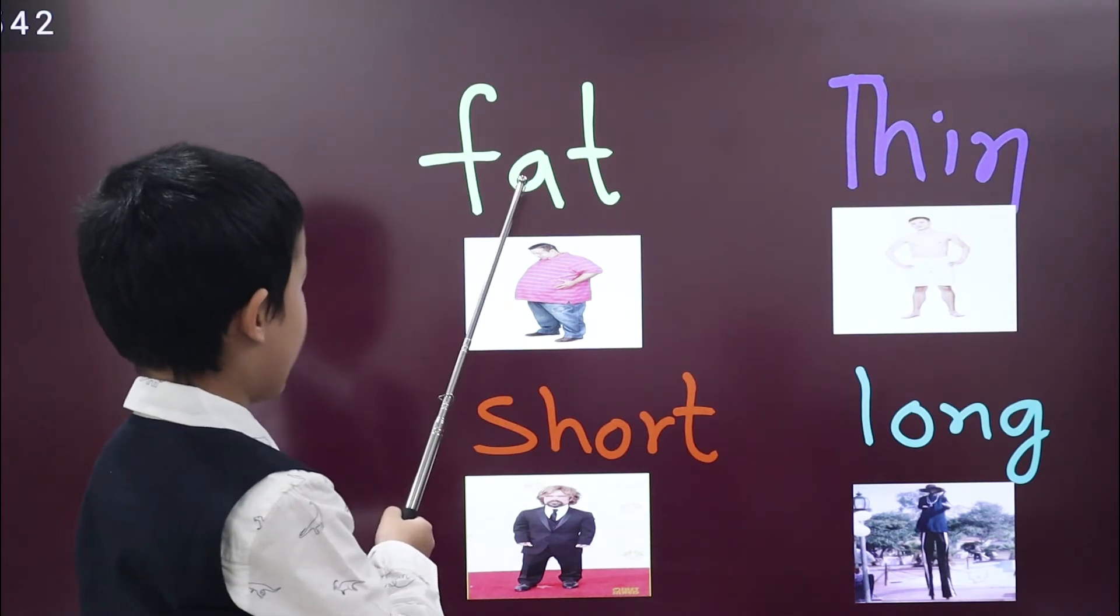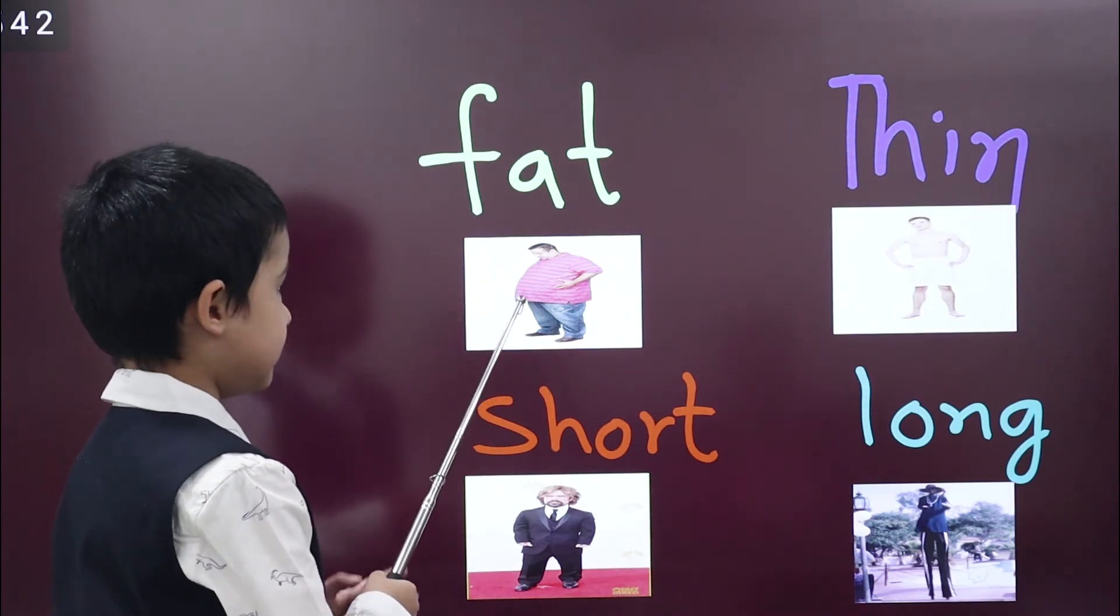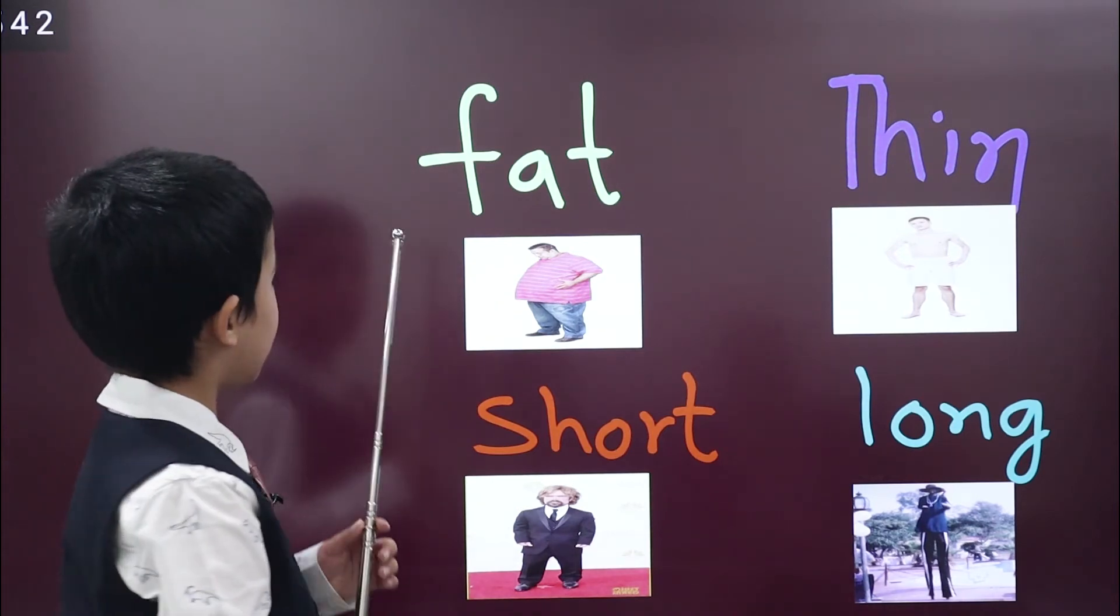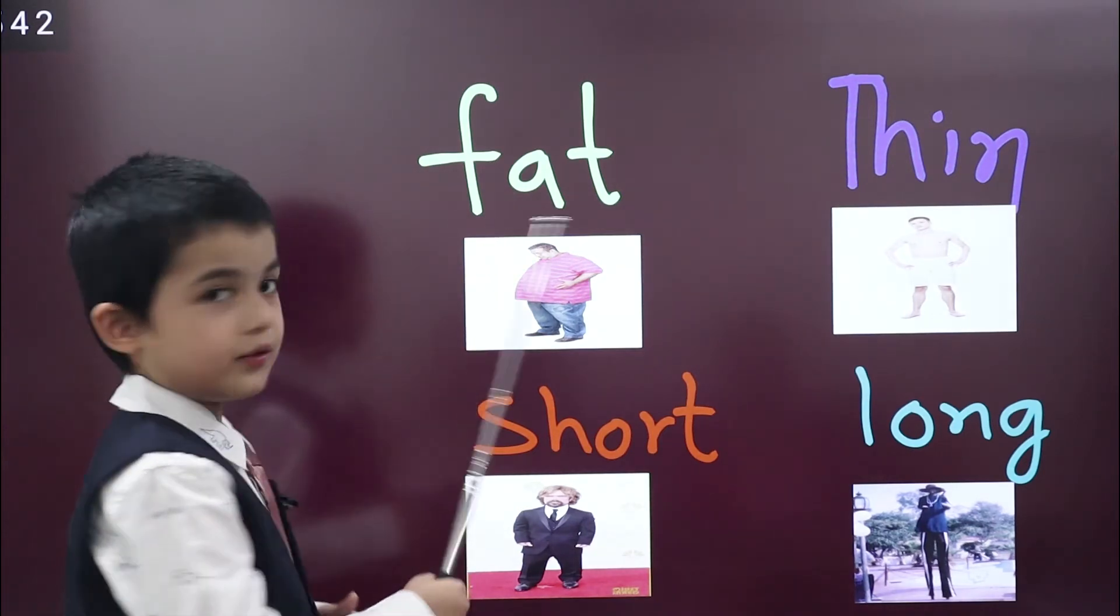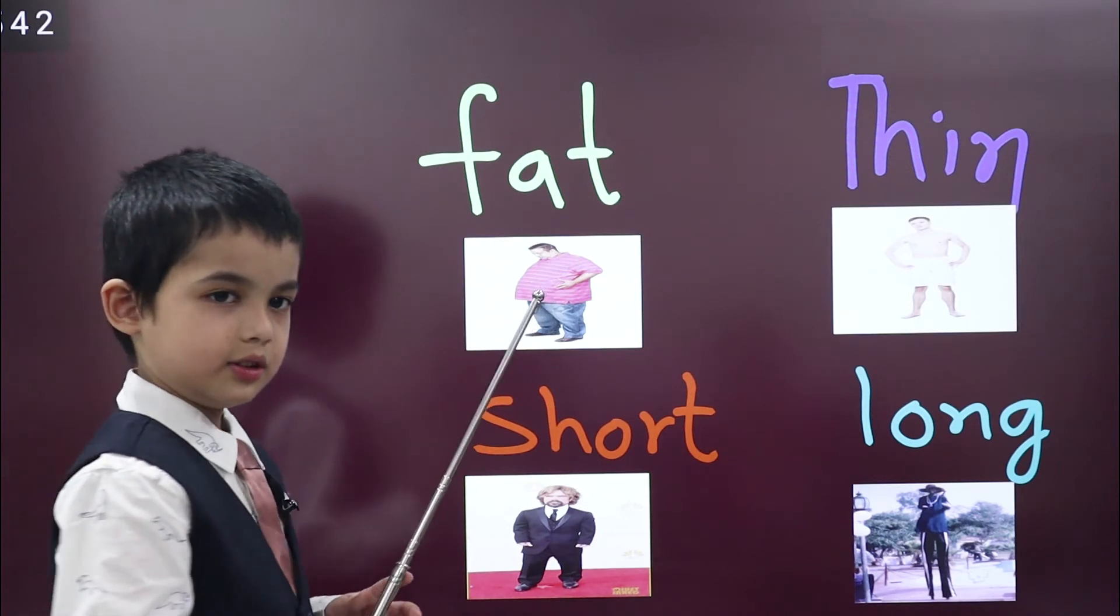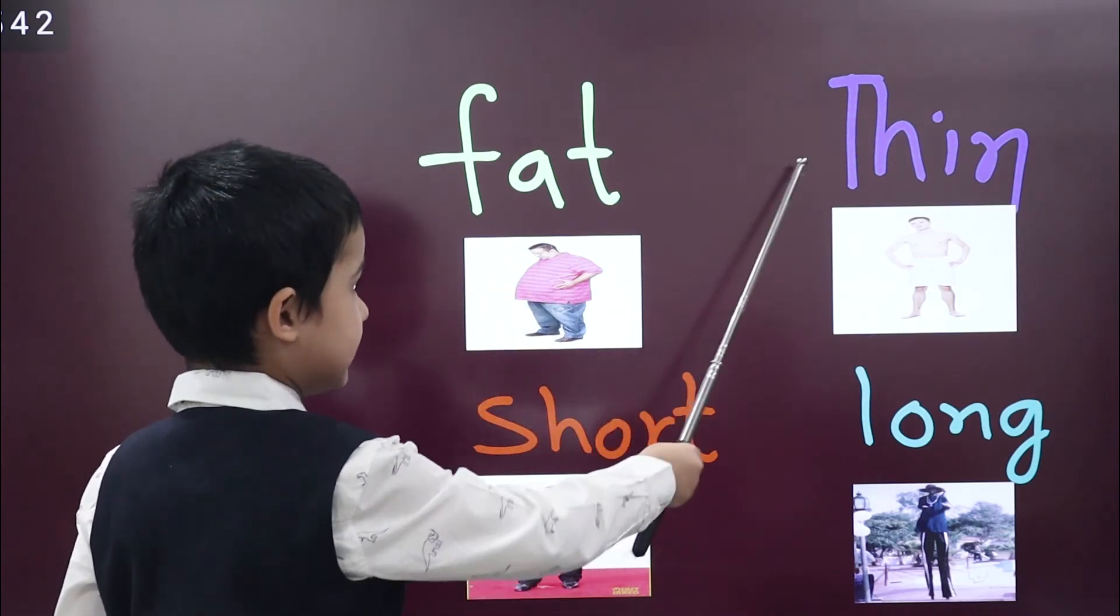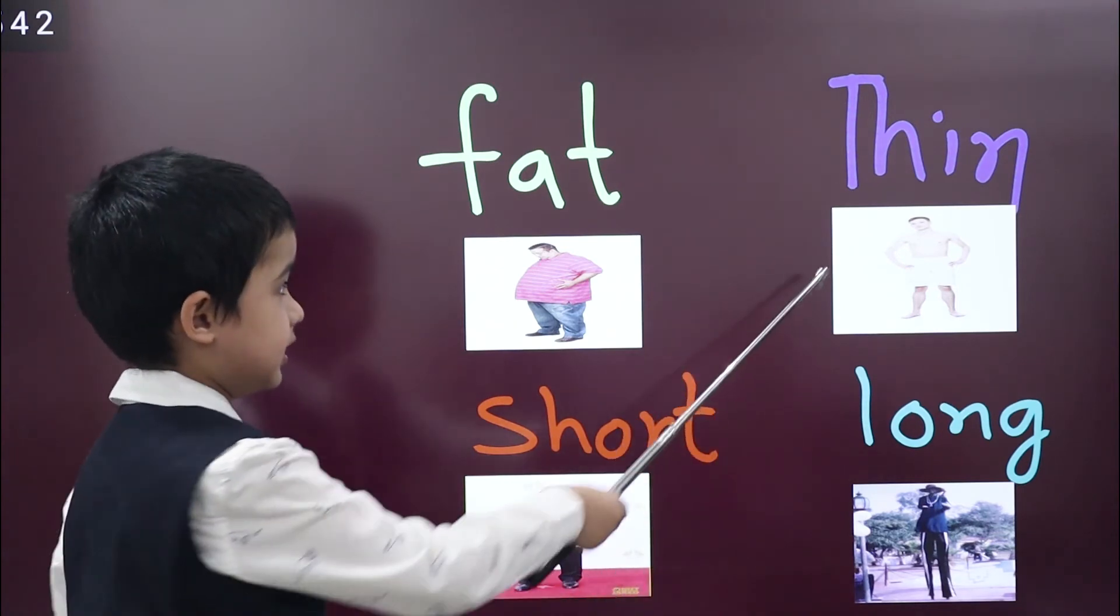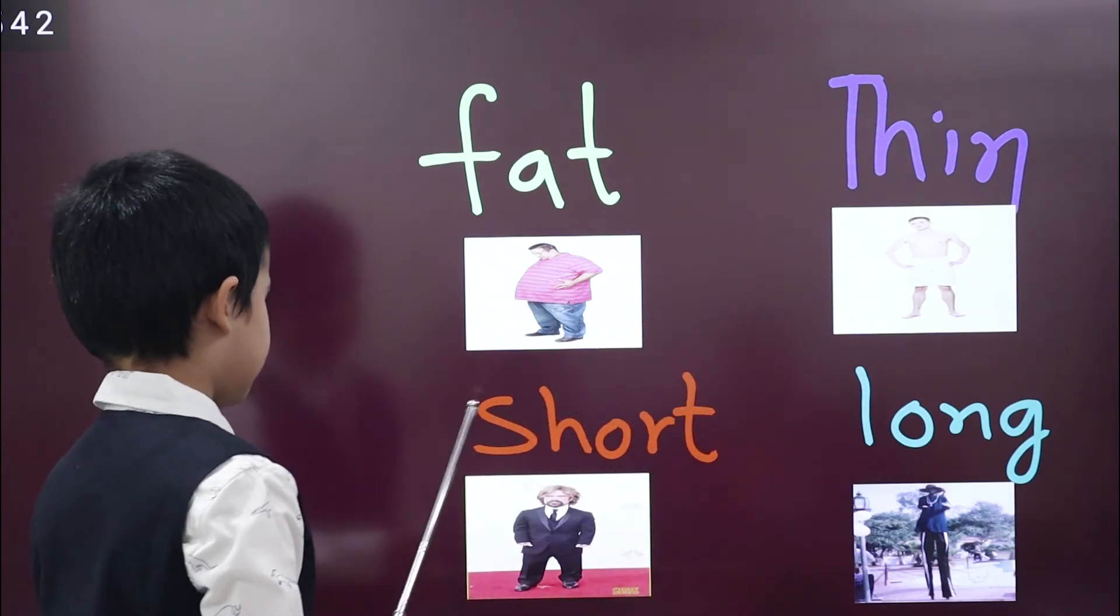Next word is fat. This man is fat. Don't be fat. You will get many diseases. And I told you fat in eighty word family also. Opposite of fat is thin. This man is very healthy. That's why he is thin.